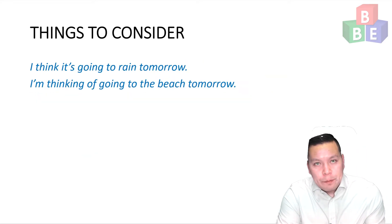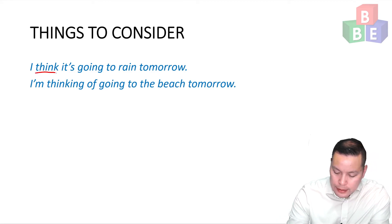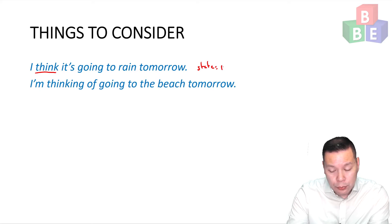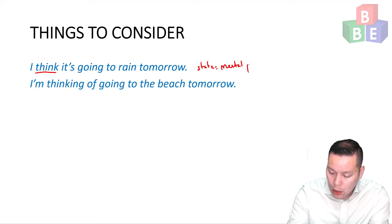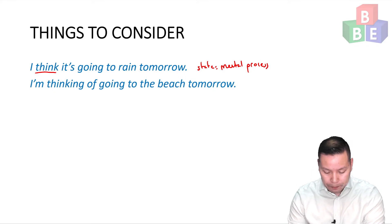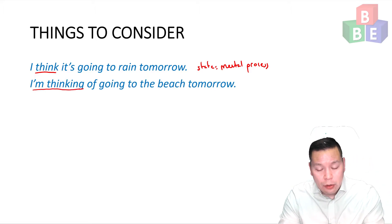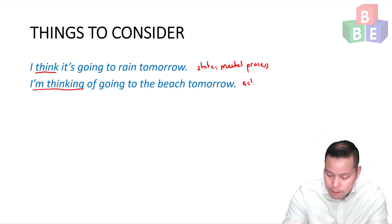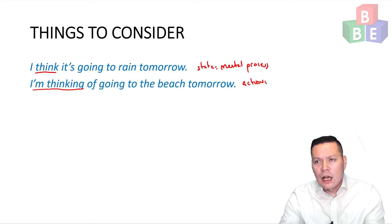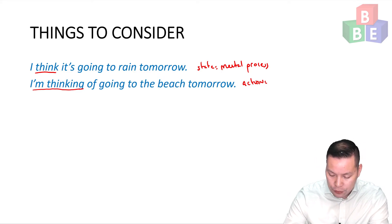I think it's going to rain tomorrow — think here is a state verb, a mental process, because you are doing something in your mind that you can't see; you're speculating about the future. The second sentence, I'm thinking of going to the beach tomorrow, is an action verb. This has the meaning of strongly considering — I have about a 70% chance of going to the beach.